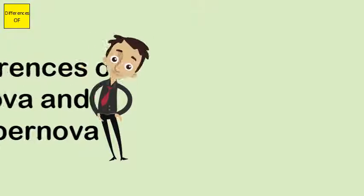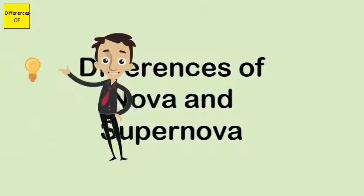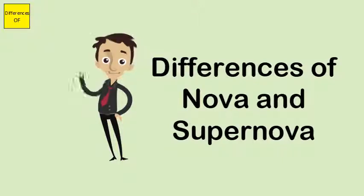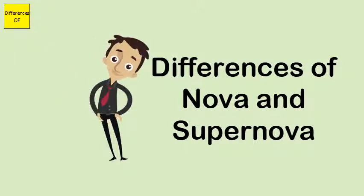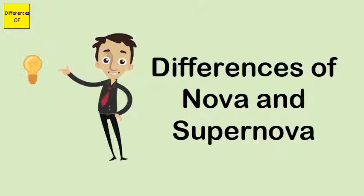Differences between nova and supernova. A nova is defined as a star that suddenly becomes much brighter and then gradually returns to its original brightness over a period of weeks to years.